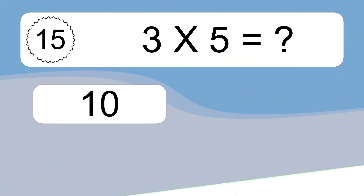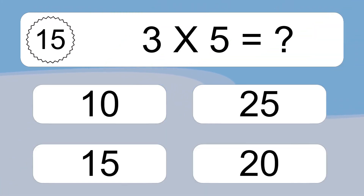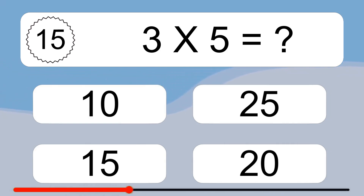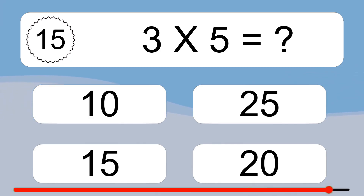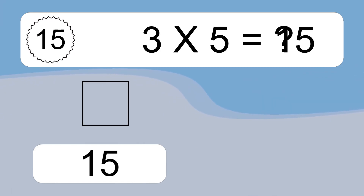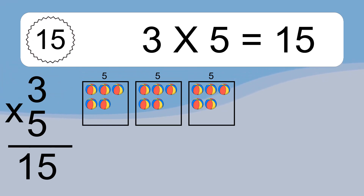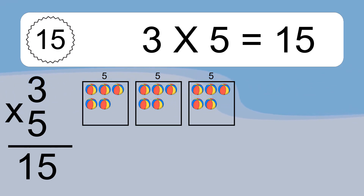3 times 5 equals what? 3 times 5 equals 15. We have 3 boxes, and each box has 5 colorful balls inside. If you count all the balls in all the boxes together, you will have 3 times 5 balls. This equals 15 balls.